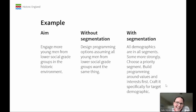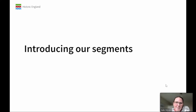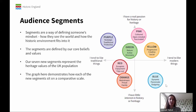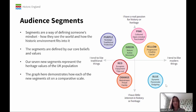I'm now going to hand over to Hannah to introduce our segments. Let's have a look at the segments that we've just rolled out at Historic England and that we're planning to roll out to the wider heritage sector for free later in the year. Our segments are a way of defining someone's mindset. So they give us an understanding of how they see the world and how the historic environment and heritage fits within that. Our segments are defined by core beliefs and values, and whilst our behaviour varies from day to day, who we are as people is slower to change. Our seven segments represent the heritage values of the population at large.